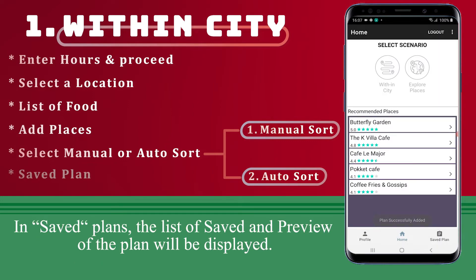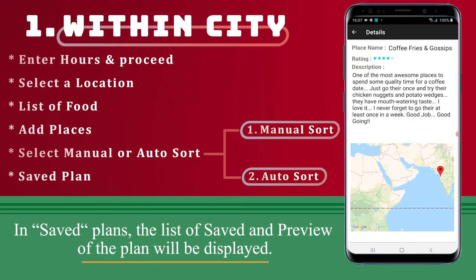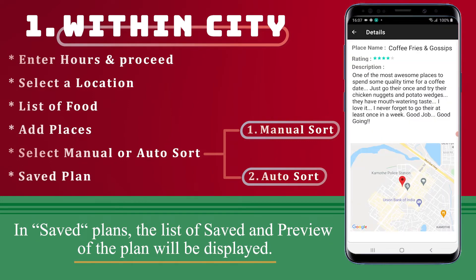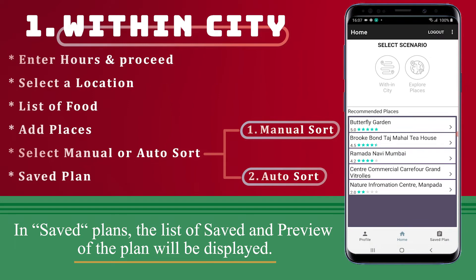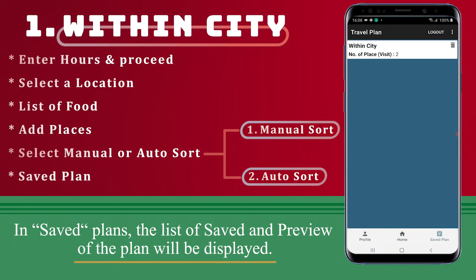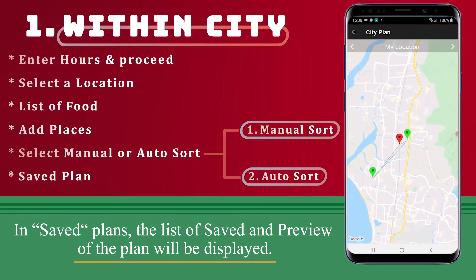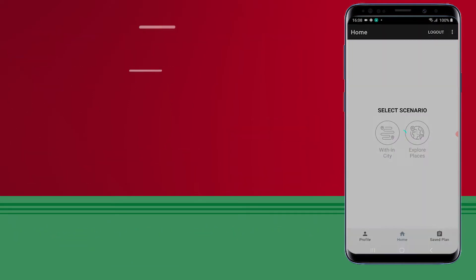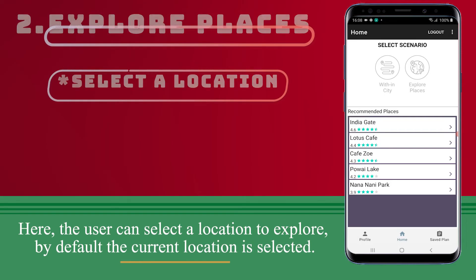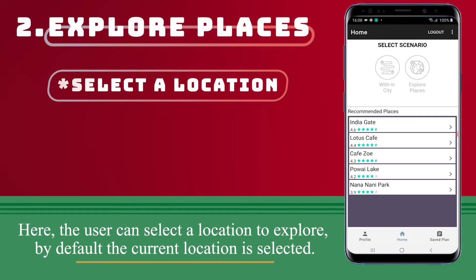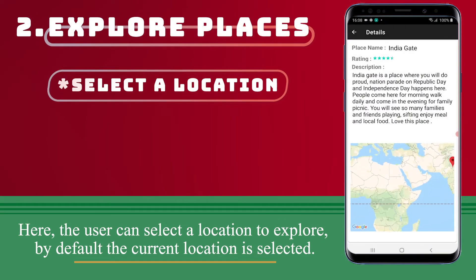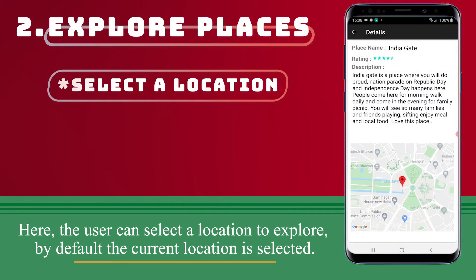In saved plans, the list of saved plans and a preview of the plan will be displayed. Here, the user can select a location to explore. By default, the current location is selected.